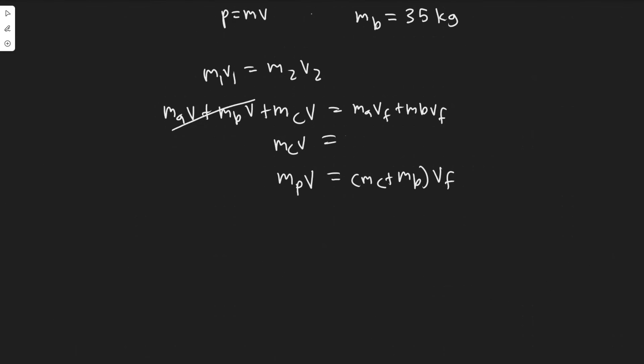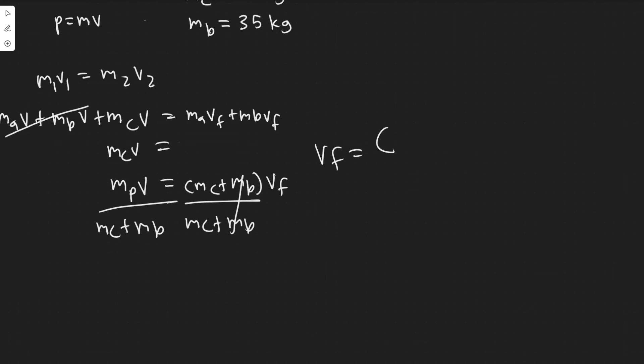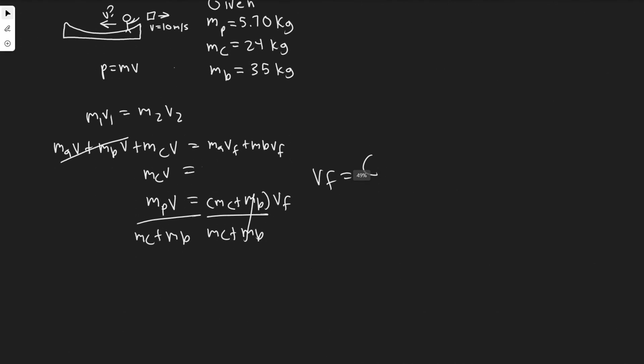If we want to solve we would just divide by mC plus mB. So v final is basically the mass of the package which was 5.7 times its velocity 10 divided by these masses added up. 5.7 times 10 divided by 24 plus 35.